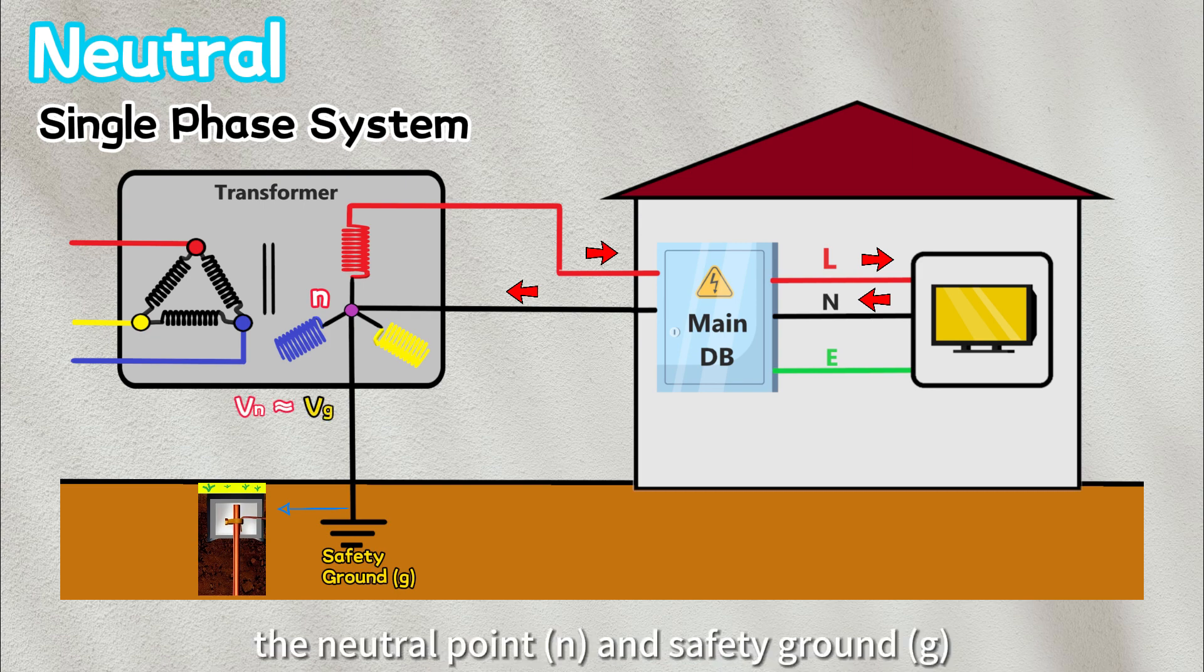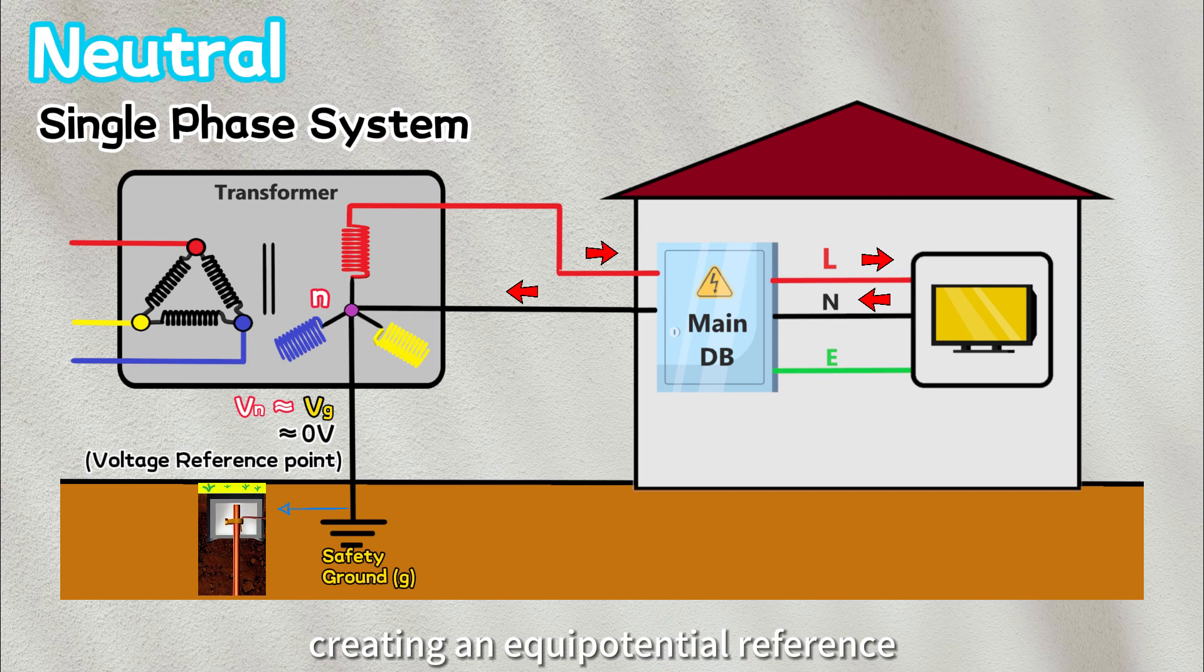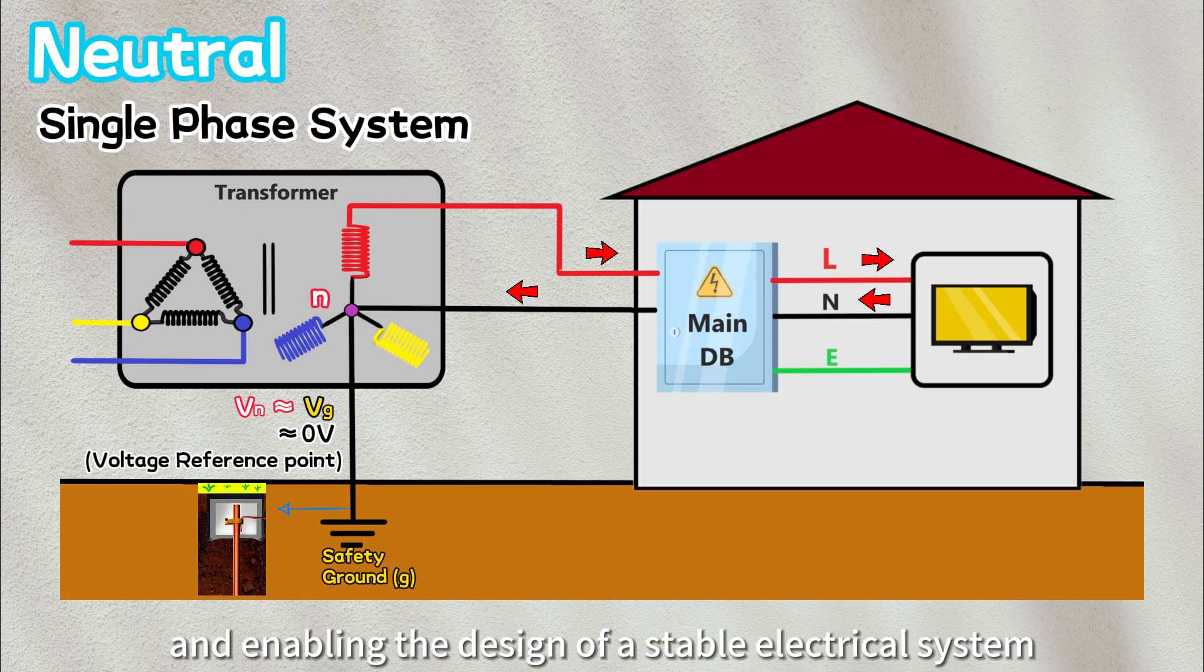With this connection, the neutral point and safety ground share the same potential, creating an equipotential reference, commonly referred to as zero volt. This ground reference point is very important, particularly from a safety perspective and enabling the design of a stable electrical system.